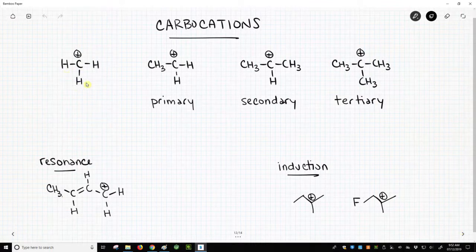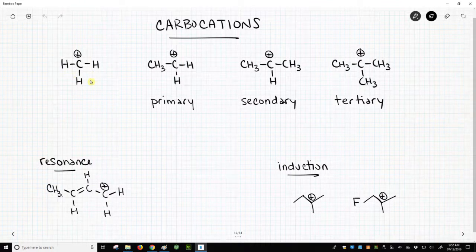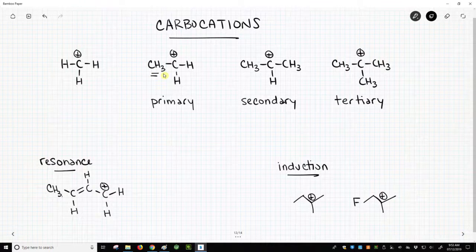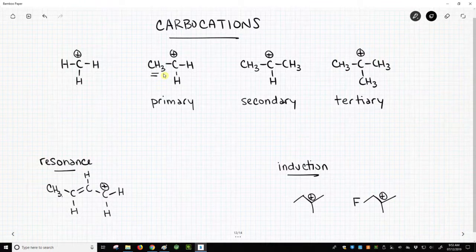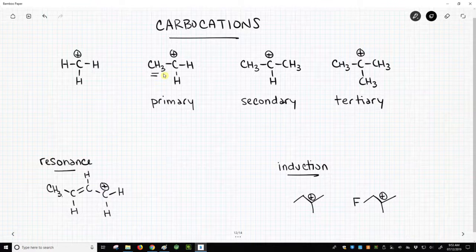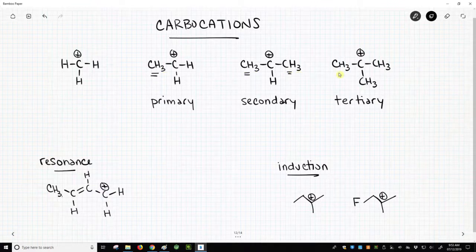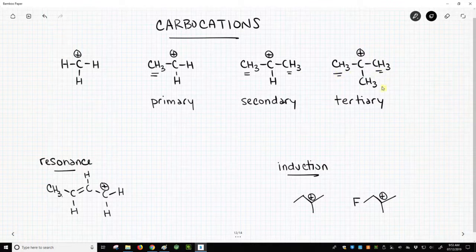Note that this first one has no other groups other than hydrogen attached to the positive carbon. Then we put one carbon group, and I drew a methyl just because it's quick to draw, but that could be an ethyl, it could be a propyl, it could be anything. In the next picture, I drew two carbon groups on our positive carbon, and then finally we have three carbon groups.